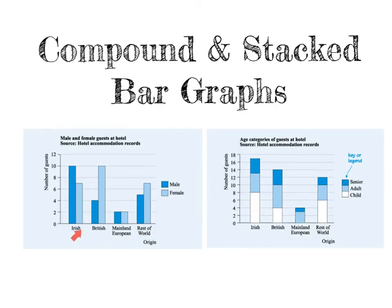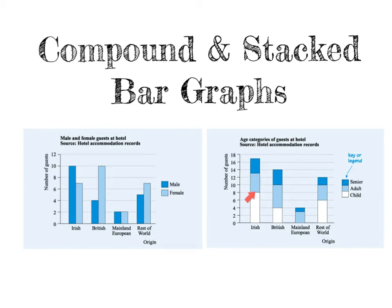We can also get more complicated bar graphs. In the first example we have a compound bar graph where males and females for British, Irish, and the rest of the country are compared. These two bars touch because both are Irish males and females, but they are separate from the British males and females. This is fairly simple to read — there are 10 male guests that are Irish and 7 female guests that are Irish. However, in the next question it gets more complicated: the numbers are stacked on top of each other. Here there are 8 children; from 8 to 13 is 5, so there are 5 adults; and from 13 to 17 is 4, meaning there are 4 seniors.